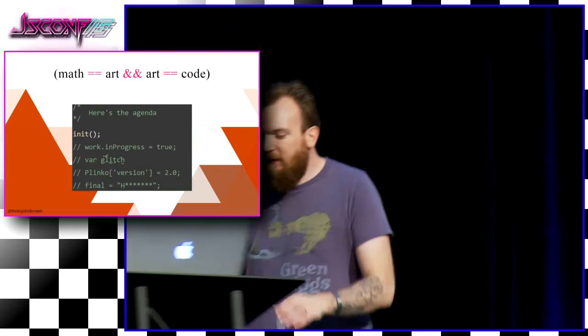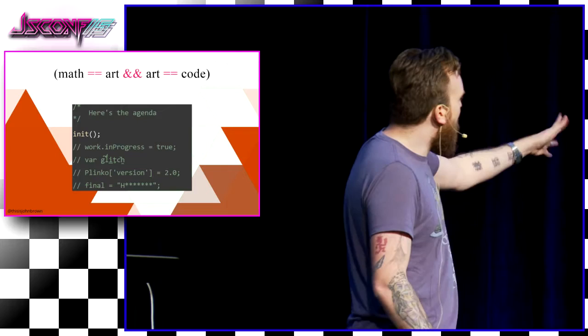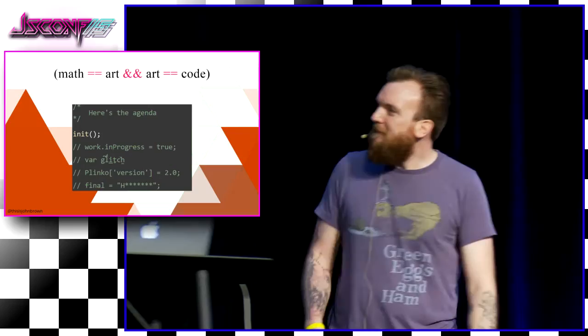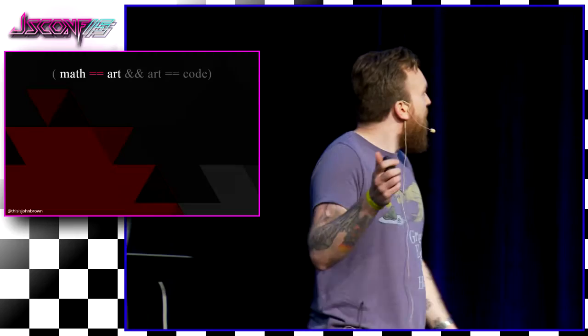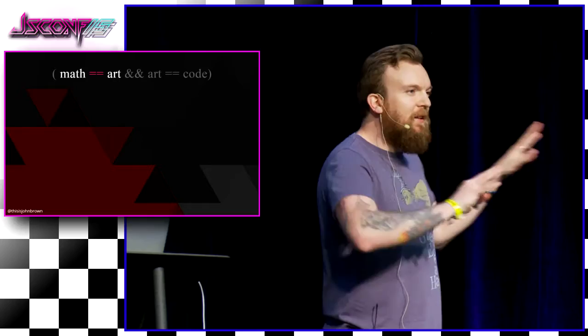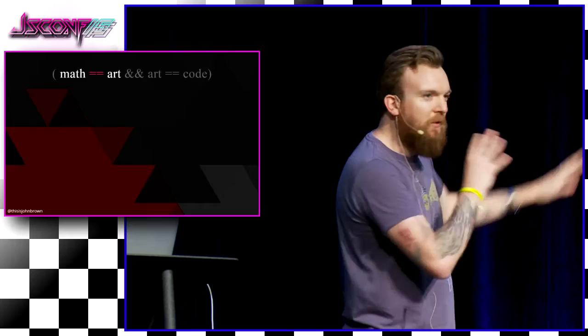Hi everybody. I'm going to refresh this and go back to my title slide. This is actually great because it's a little bit of glitch art right in the middle of my presentation that's completely unplanned — I love it. So here's the agenda, here's what we're going to talk about. I'm here to talk to you guys about math, art, and code. One of those things may not seem like the others, but hopefully by the end of this talk you'll understand where I'm coming from with this weird transitive property equation.